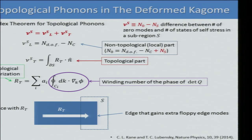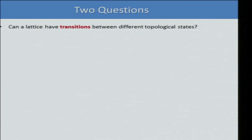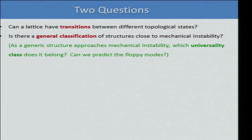Now let's get to the first part. We address two questions: First, can we have topological transitions between different topological states in mechanical systems? Such transitions have been studied in quantum topological states of matter. Second, is there a general classification of all structures approaching mechanical instability — can we predict where the floppy modes are going to be and which class a generic experimental system belongs to?